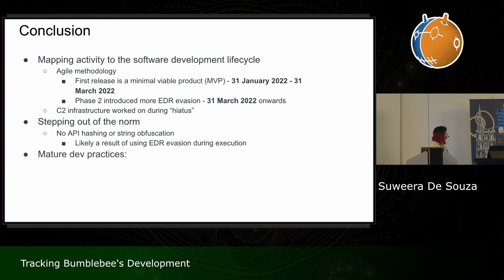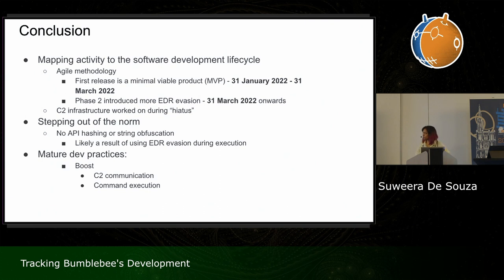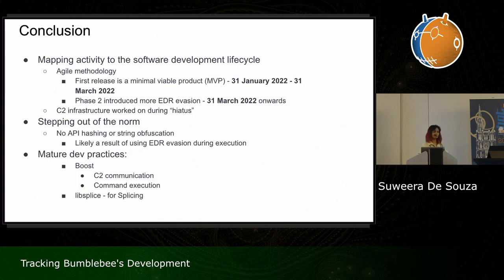Finally, the developers seem to have mature development practices — especially their use of Boost, used for communicating with the C2 and in the GDT task for running commands asynchronously. Boost is not common among malware — it makes binaries bulky — but using it means they don't need to worry about which Win32 APIs to use at the end of the day. They also use the well-established LibSplice library for splicing, ensuring APIs are modified properly in memory so payloads will run correctly.